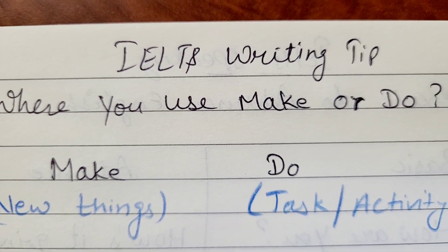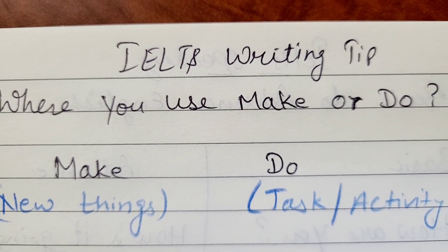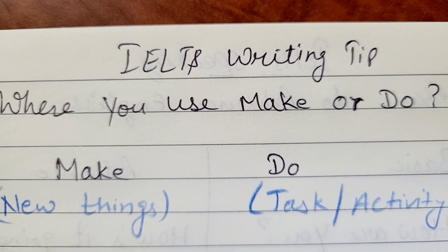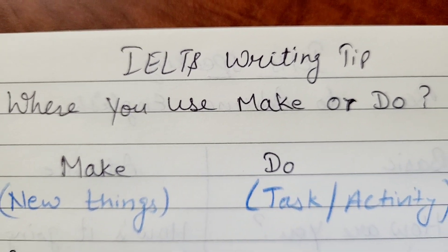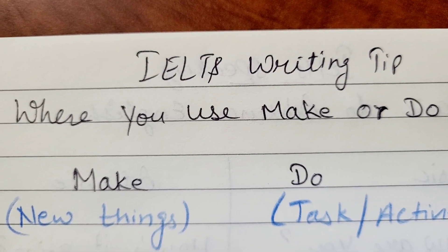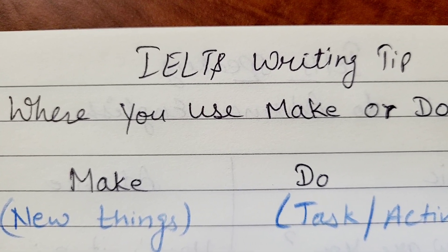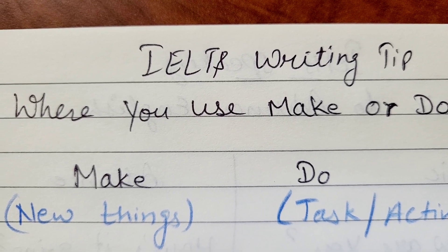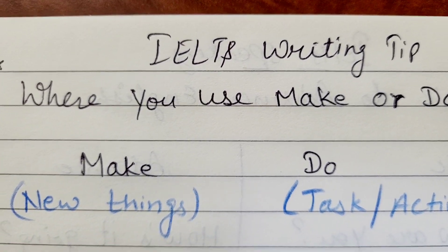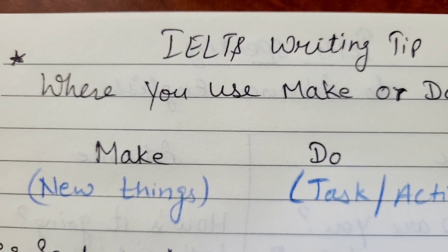Aur 'do' — jo koi task already chal rhi hoti hai, us task aur activity ke liye ap use karte ho 'do.' So this is the rule for 'make' or 'do': nai chiz ke liye 'make' use karo ge, aur kisi bhi task ke liye 'do' use karo ge.